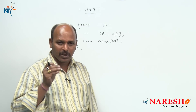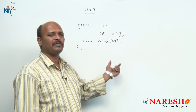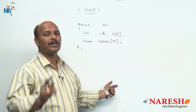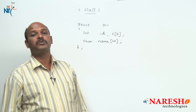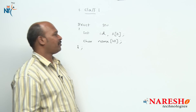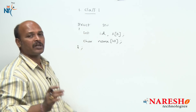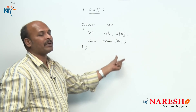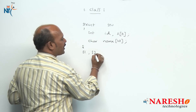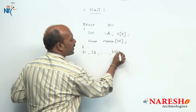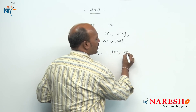Structure is called a user defined data type. A structure is also called a complex data type because different types of variables are stored under one name at one place. Due to this advantage we can maintain object oriented data. Here the struct keyword denotes we are going to start a structure, followed by the structure name and structure members. To work with this structure, I am going to declare some variables — suppose s1 through s10, which are called structure variables. Generally, variables are stored in the stack.